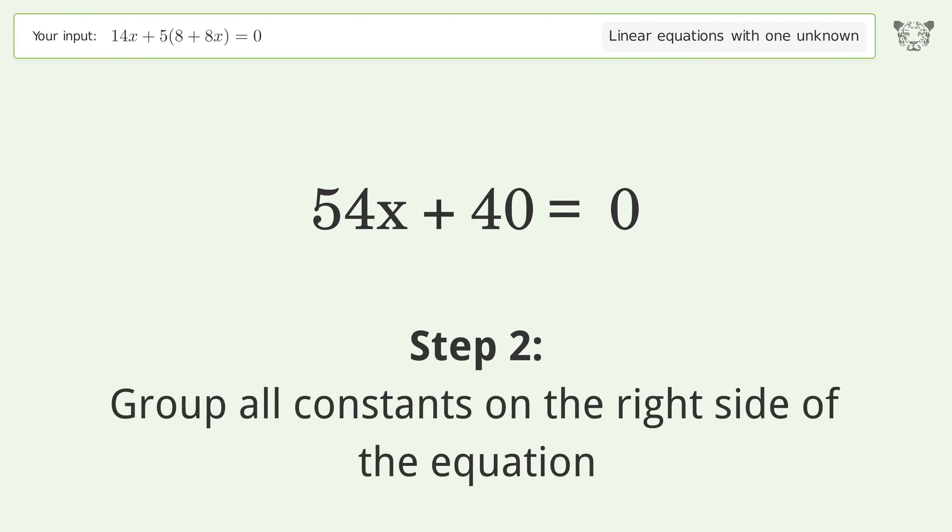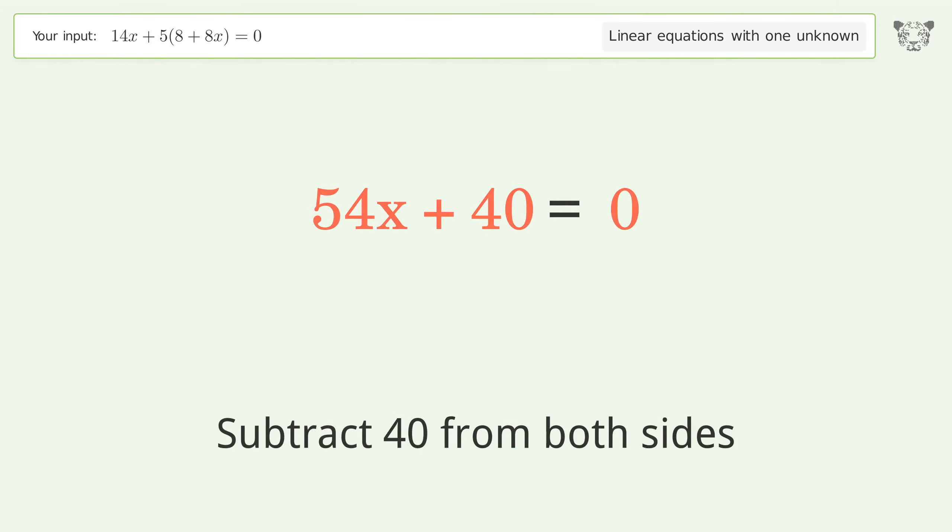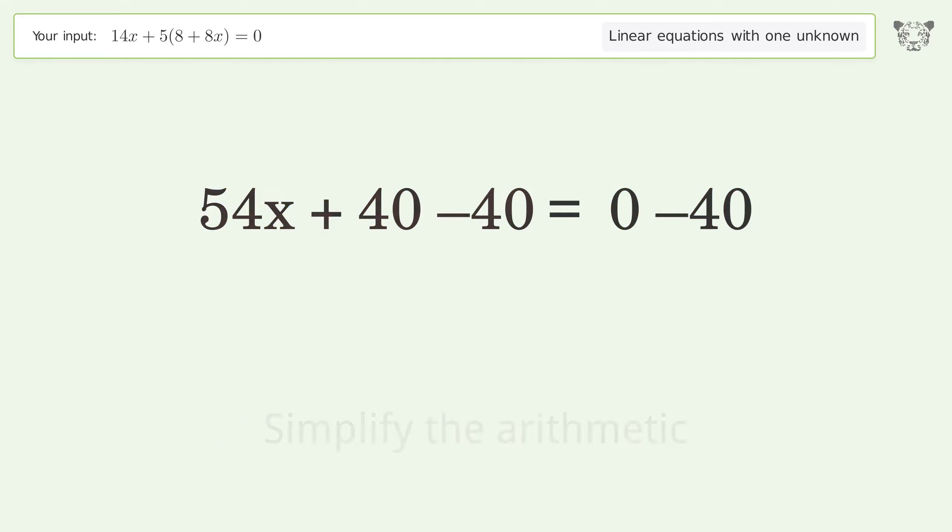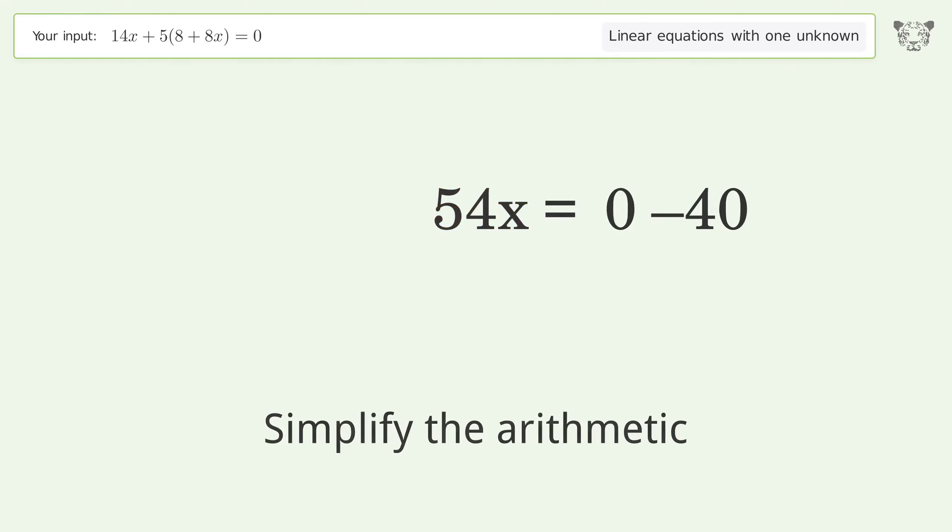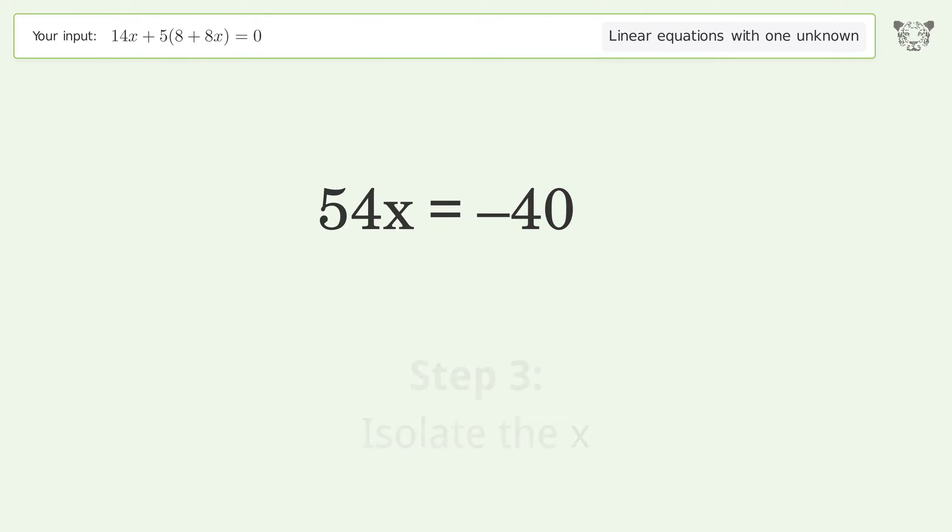Group all constants on the right side of the equation. Subtract 40 from both sides. Simplify the arithmetic. Isolate the x. Divide both sides by 54.